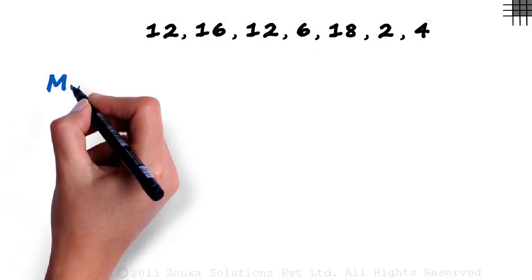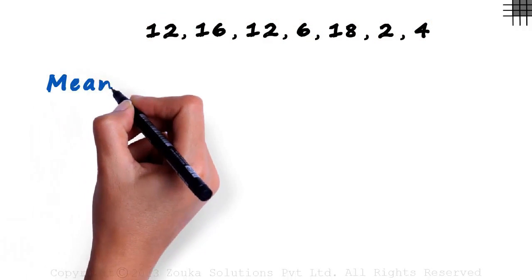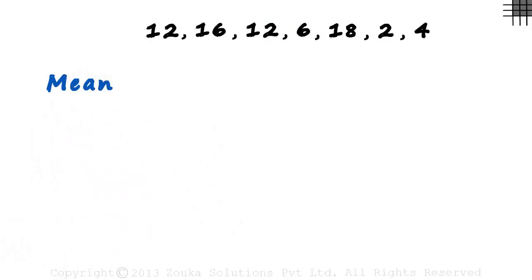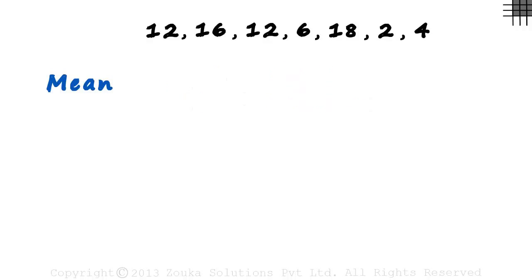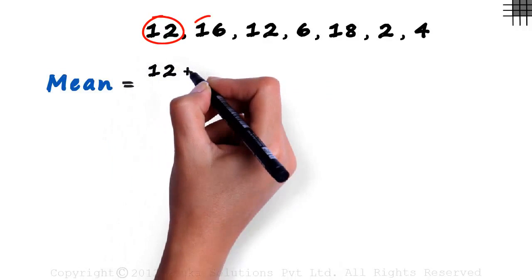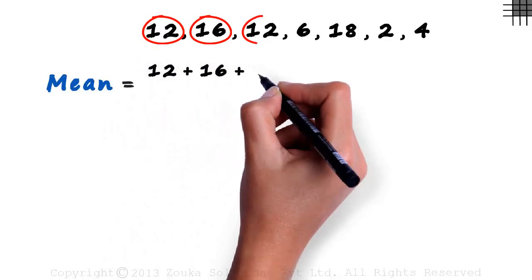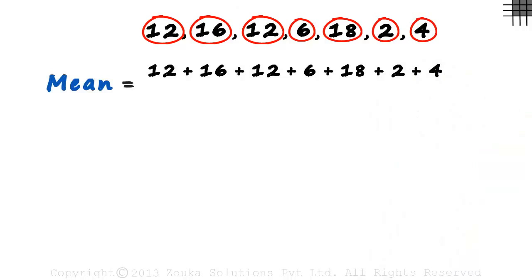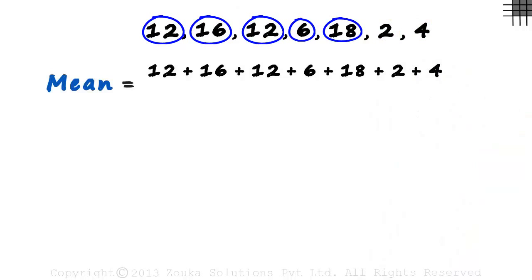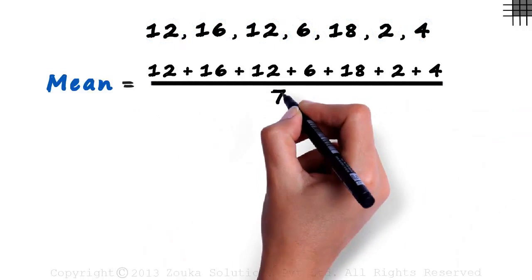Let's find out the arithmetic mean of these numbers first. We know that it equals the sum of values divided by the number of values. The sum of values would be 12 plus 16 plus 12 plus 6 plus 18 plus 2 plus 4. And there are 7 values. We divide this sum by 7.